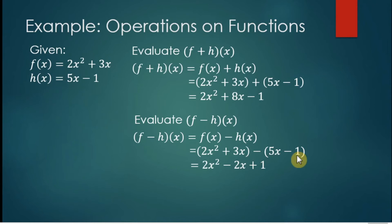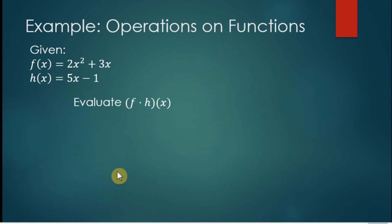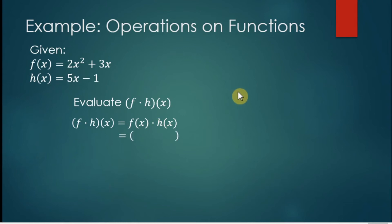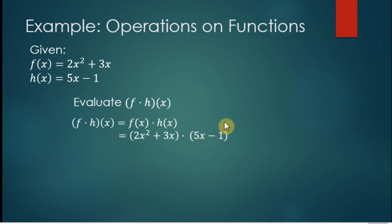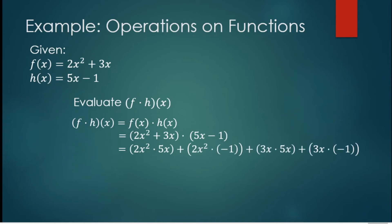plus one. Let us multiply the two functions. We copy the two functions and put the dot symbol between them to denote multiplication: 2x squared plus 3x, times 5x minus 1. If we remove the dot symbol it would still mean multiplication because we are using parentheses.